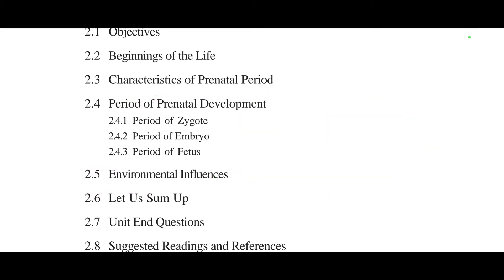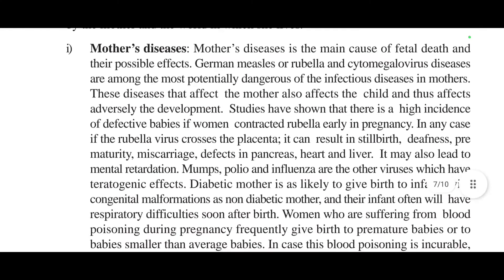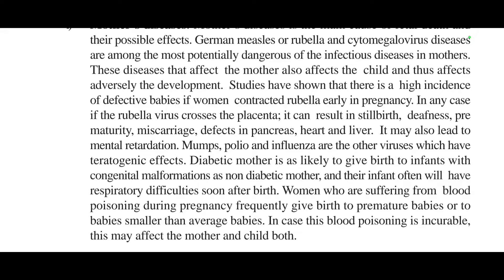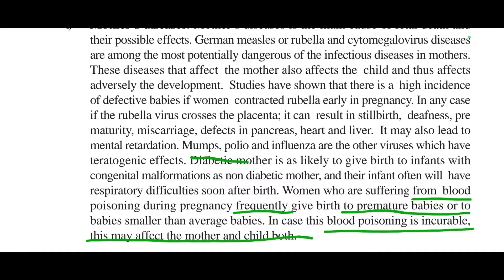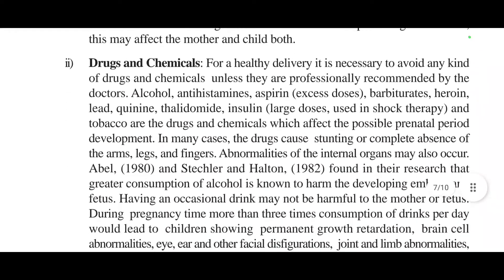So let's begin. Infection is one way by which the baby can be harmed or die. Women who are suffering from blood poisoning during pregnancy frequently give birth to premature babies or to babies smaller than average. In cases where blood poisoning is incurable, this can affect both the mother and the child, causing disease in the fetus.